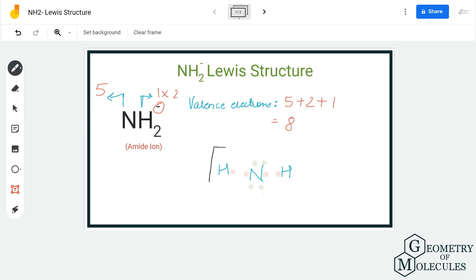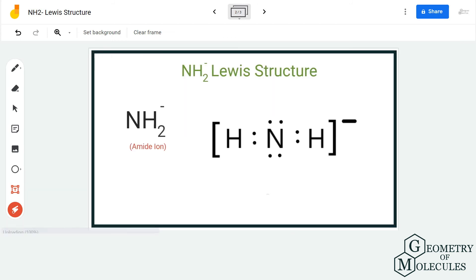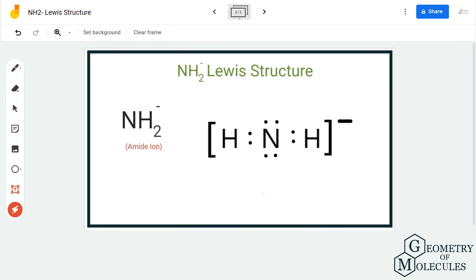Always remember to put the Lewis structure in brackets and mention the charge when you are drawing a Lewis structure for an ion. An ion is basically something that accepts or donates electrons and hence gets a minus or plus charge, which is positive or negative charge.